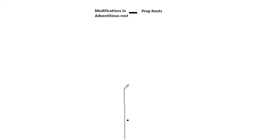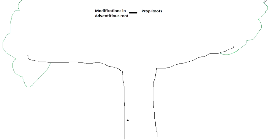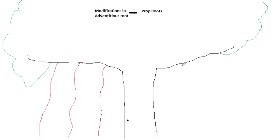Let this be the tree trunk — there is the branch. As you know, the banyan tree is a huge tree with a huge trunk and huge branches. Prop roots are observed in banyan trees. In a banyan tree, some structures hang from these branches down to the ground on both sides. These structures are called the prop roots of the banyan tree.